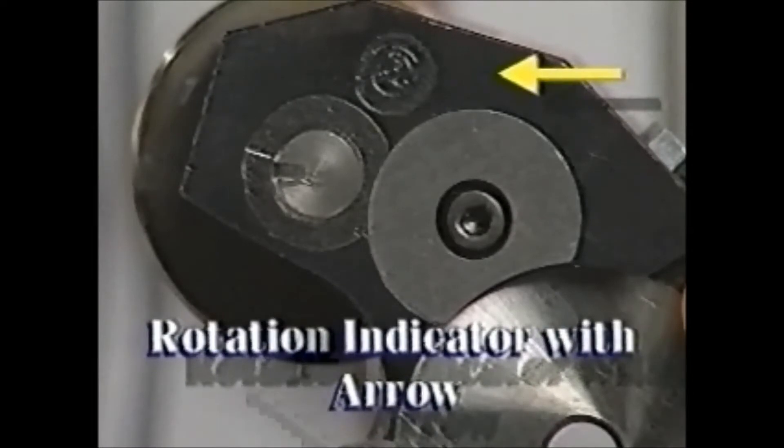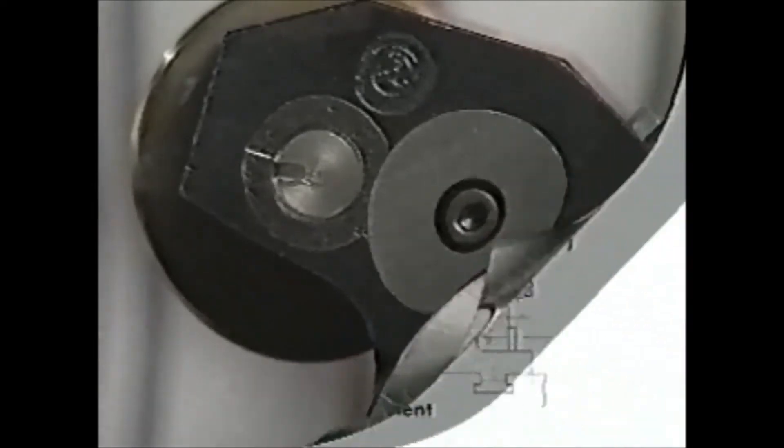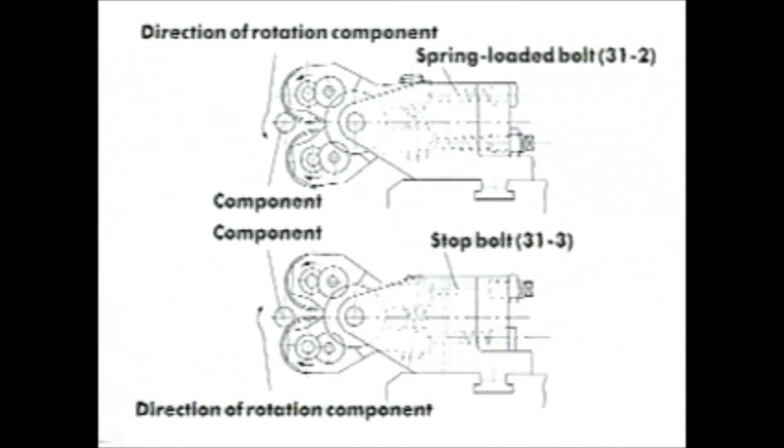There is an arrow marked on the side of each arm showing the direction of rotation of each roll. The roll that rotates in the same direction as the blank must contact the blank before the other roll. Install the spring-loaded bolt number 31-2 so that it contacts the arm holding the roll that rotates in the same direction as the blank.